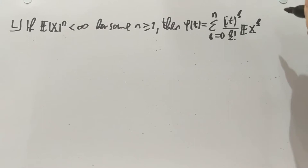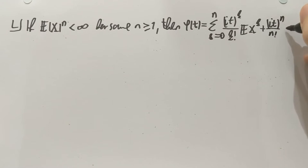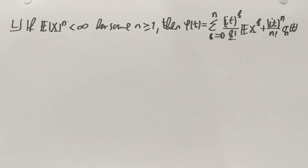Times the kth moment and then there is an error term, which is of the form it to the n over n factorial little o of t which depends on n. This little o depends on n. So that's the statement of this lemma.